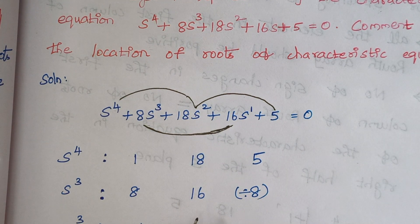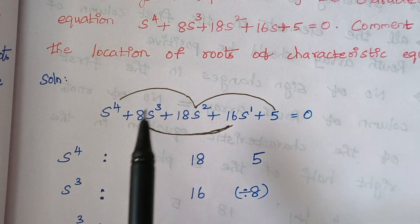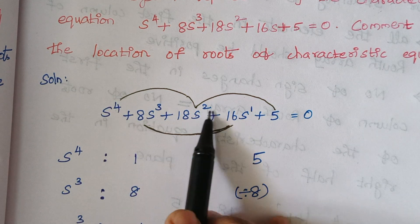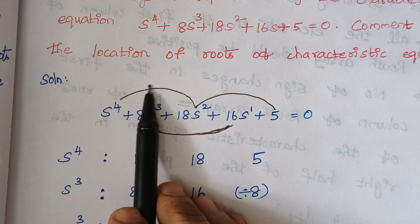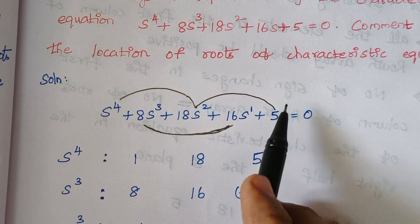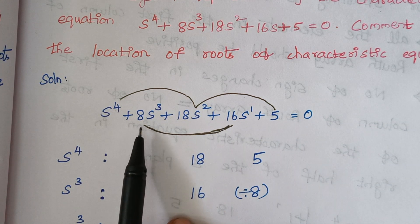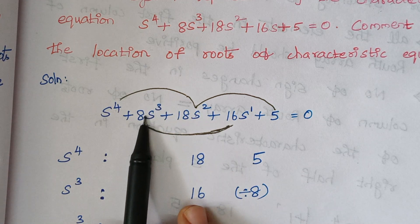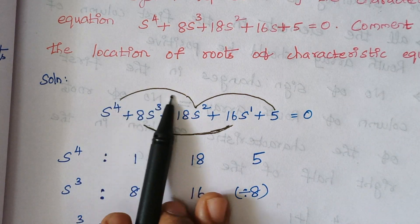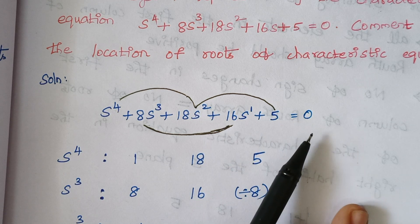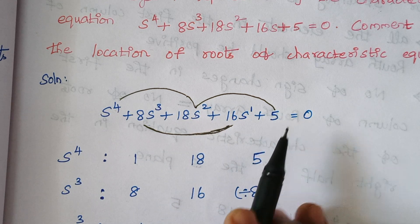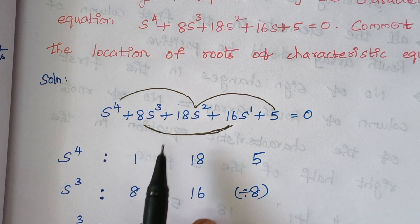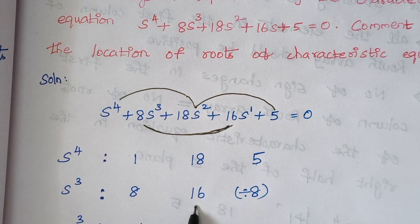Starting from the power 4, you leave one term and connect with the next term. So the powers 4, 2, and 0 are connected — this line connects the even-powered terms. Then draw another line connecting the odd-powered terms. So for S⁴, S², and S⁰, write the coefficients: S⁴ is 1, S² is 18, and S⁰ is 5. For S³, the coefficient is 8, and for S¹ it is 16.